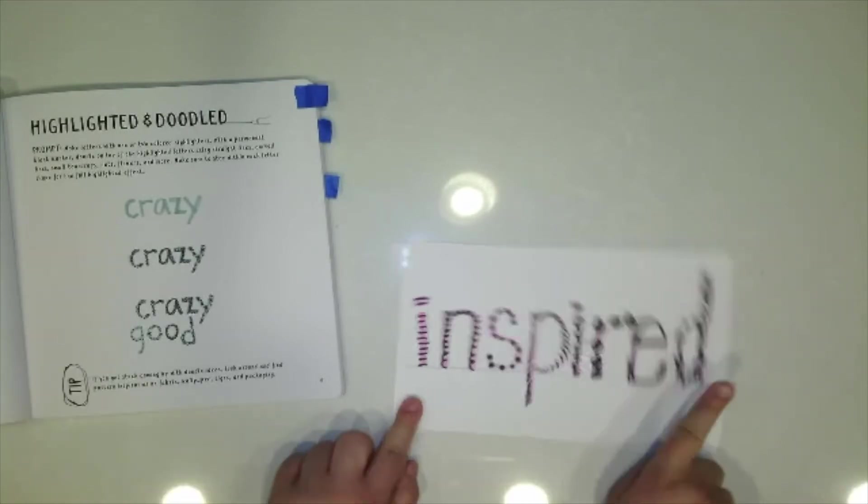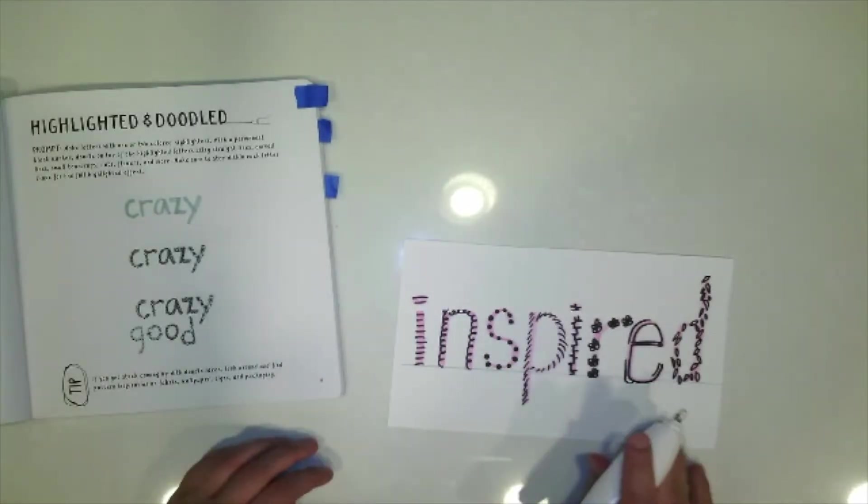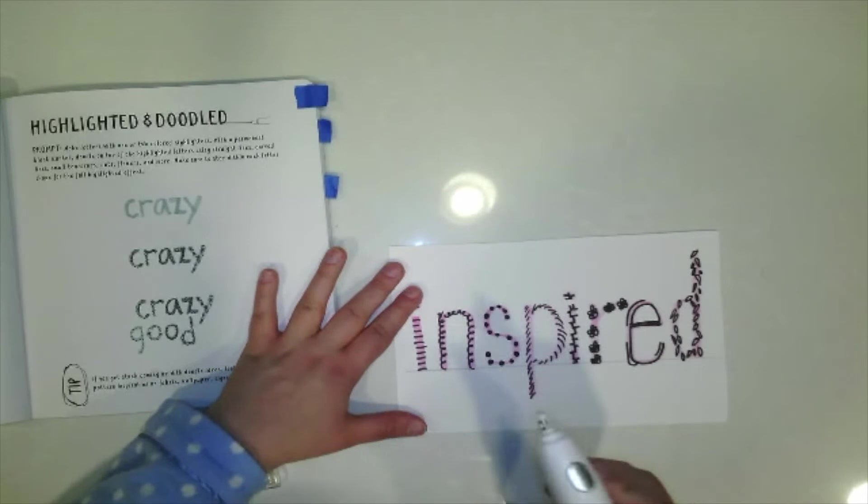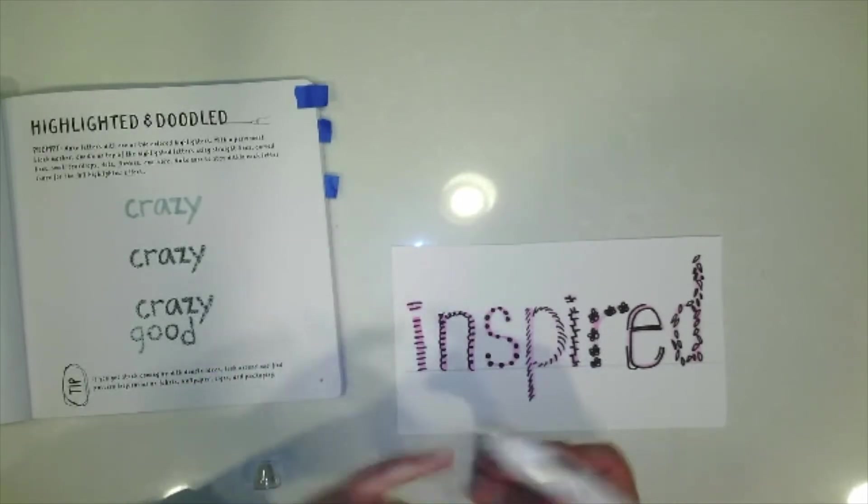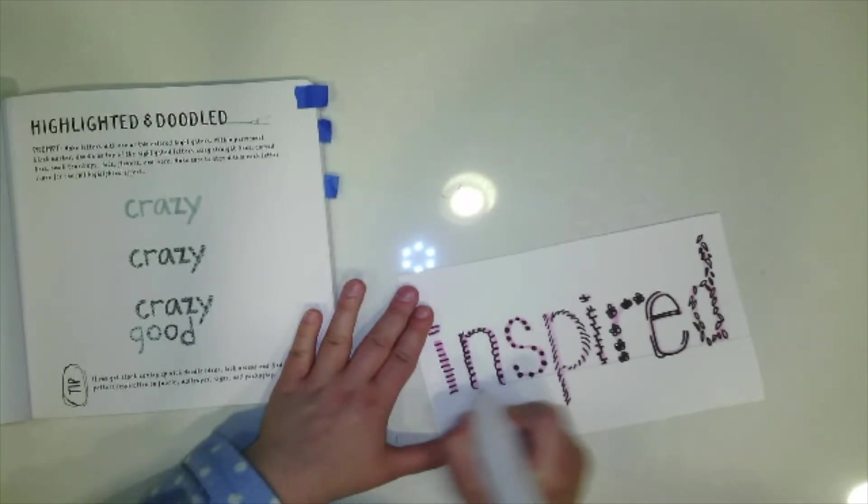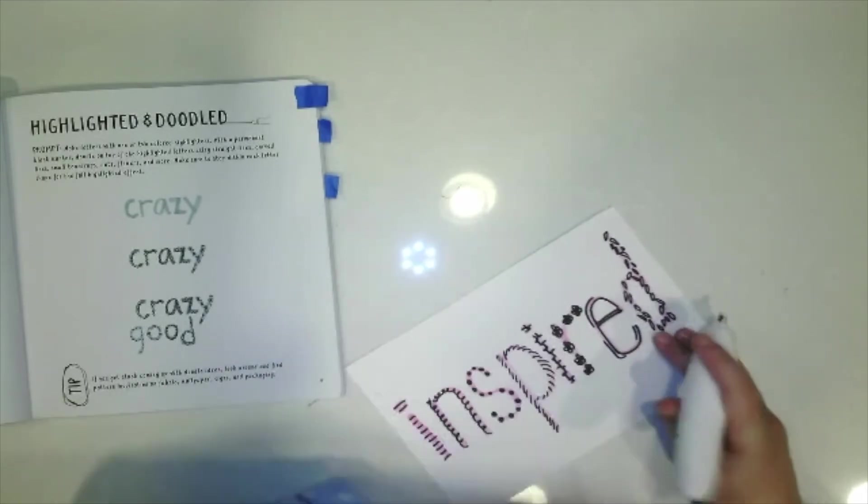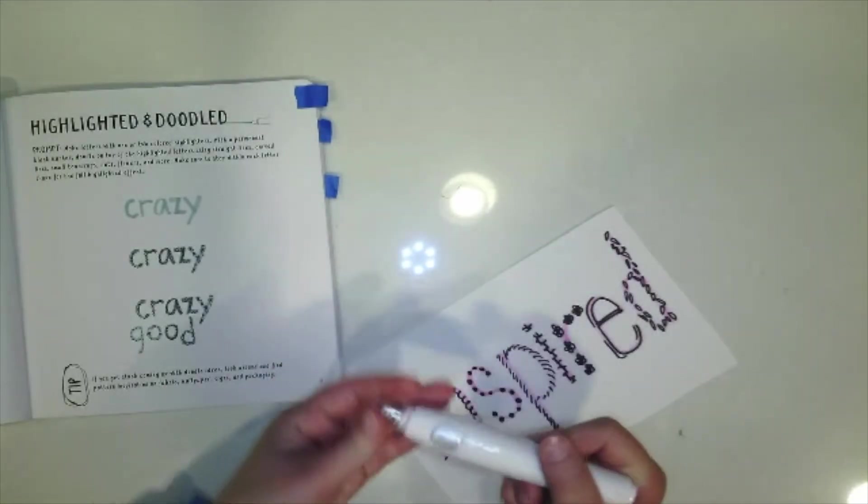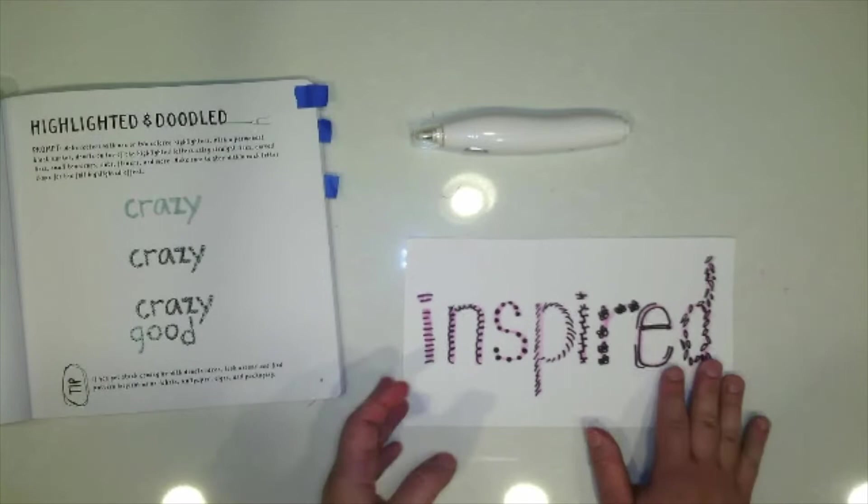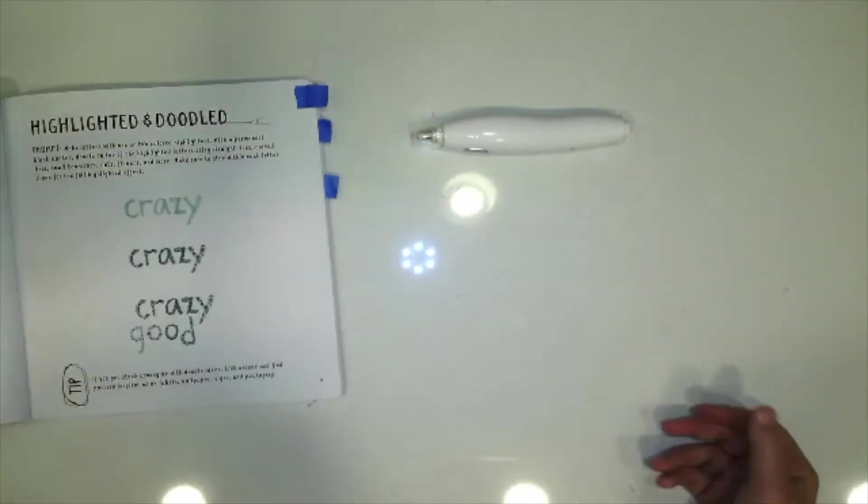And lastly I'm going to take an eraser and I'm going to erase that line at the bottom. I got this really cool electric eraser online and I've been having a blast with it because you just press down the button and it spins and it erases. A regular eraser would work just fine too. All right, so I have my first one done. I'm going to keep it to the side.